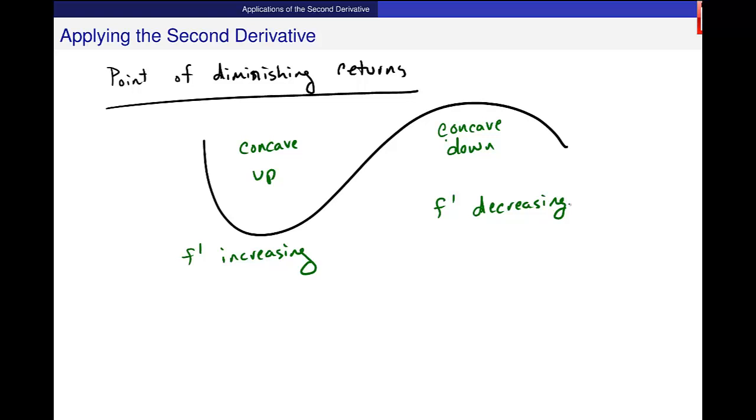So when you talk about diminishing returns, we're talking about this inflection point here, where I change from this increasing rate to a decreasing rate. And it is this point right here, diminishing returns, this is the inflection point where I make that change.